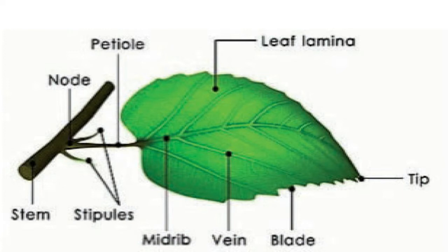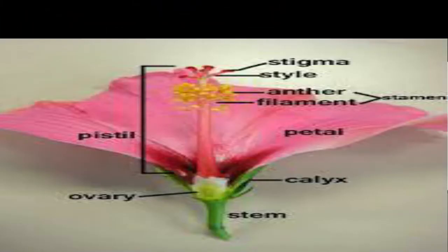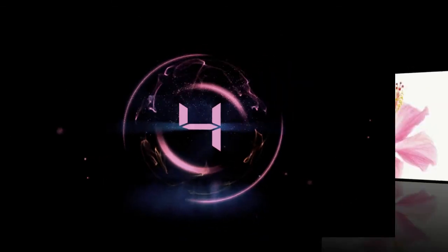Let's check the longitudinal section diagrams. That is the longitudinal section of hibiscus flower. Apart from reviewing the diagrams, let's now study in depth the classification of hibiscus flower.